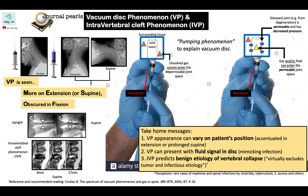Third, intravertebral cleft phenomenon predicts a benign etiology of vertebral collapse. In this article, it was said that intravertebral cleft phenomenon can virtually exclude tumor and infectious etiology, with some exceptions.